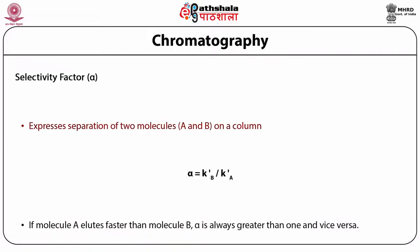The separation of two molecules A and B on the column is expressed by the selectivity factor alpha. Alpha is defined as the ratio of the capacity factor of B to the capacity factor of A. If molecule A elutes faster than molecule B, the selectivity factor is always greater than 1, and vice versa.